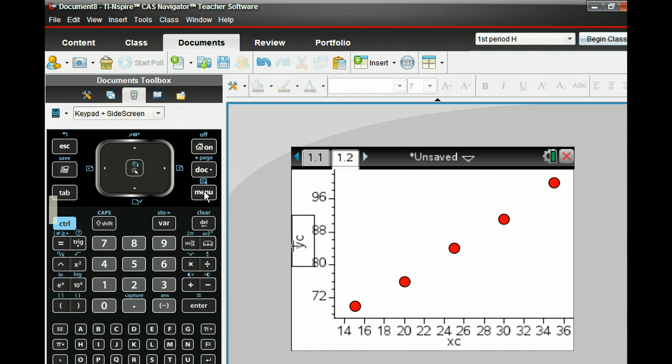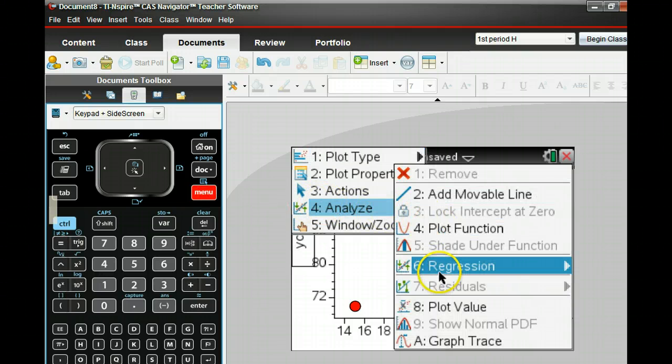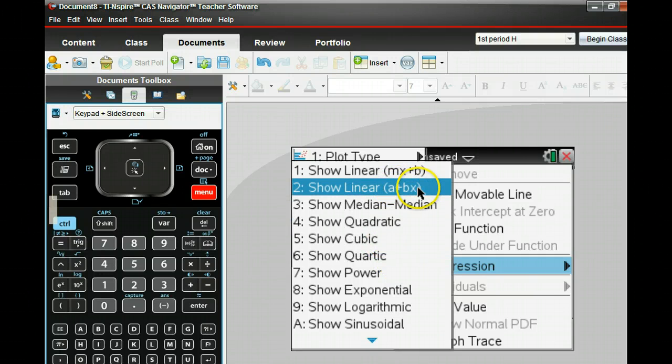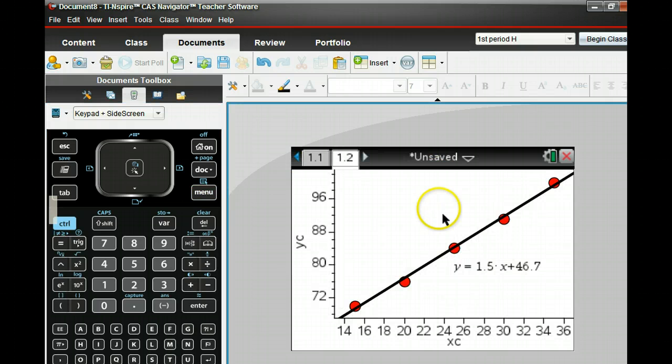To do the regression, it's pretty easy. Hit the menu key. Analyze. Regression. Then you get to choose. In science class, you may want to do show linear A plus BX. I think in math class, we always typically want this. If we want to do a linear regression, it shows you the equation of the linear regression, as long as you click on the line.